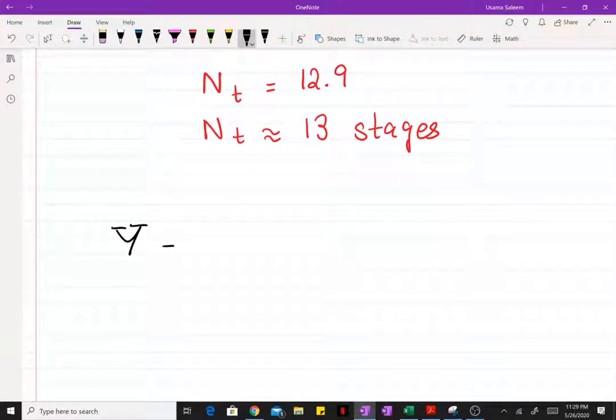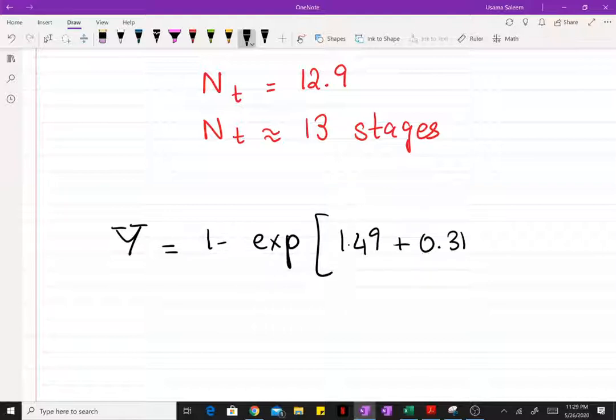One of the equations that I found was y equals 1 minus exponent (1.49 + 0.315x - 1.805) over x to the power 0.1.